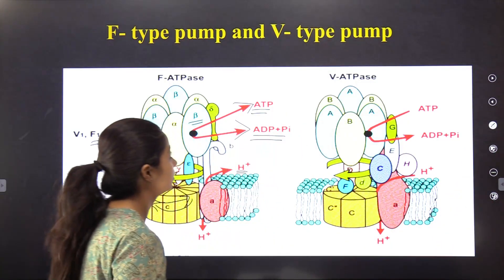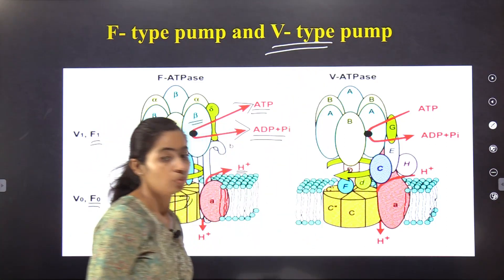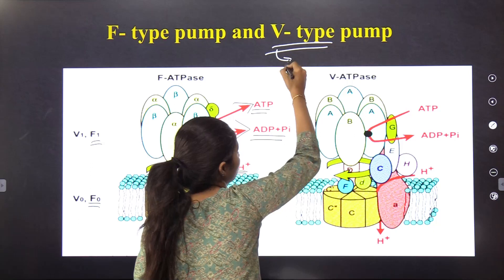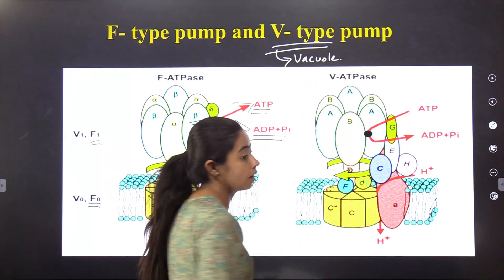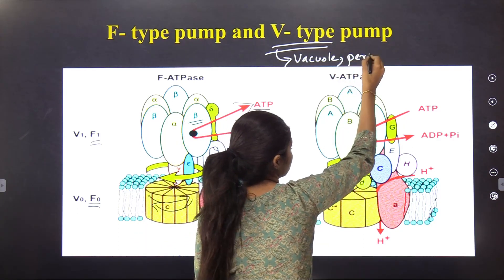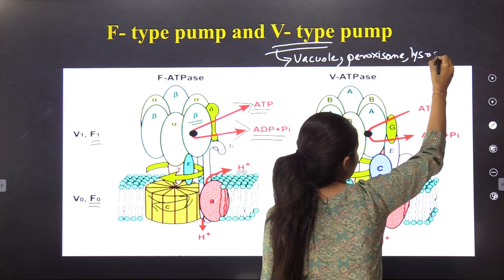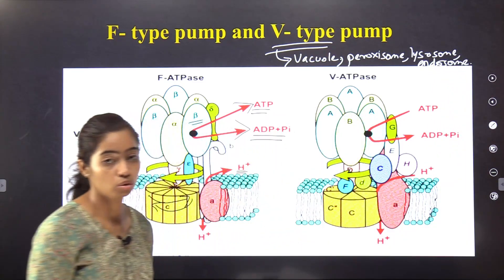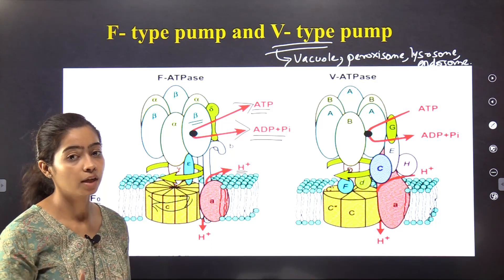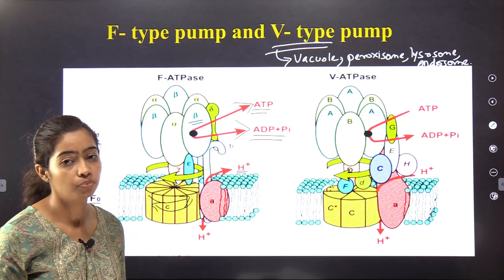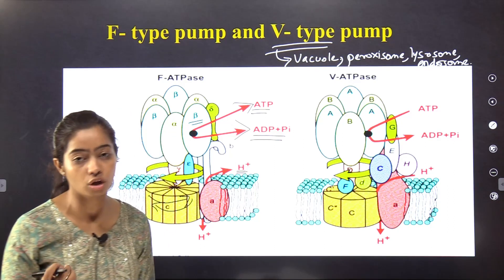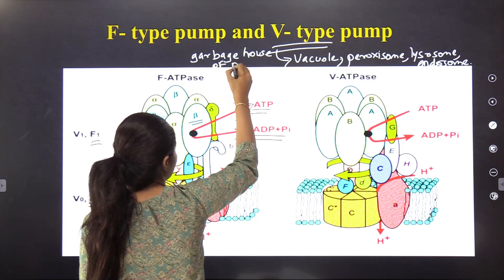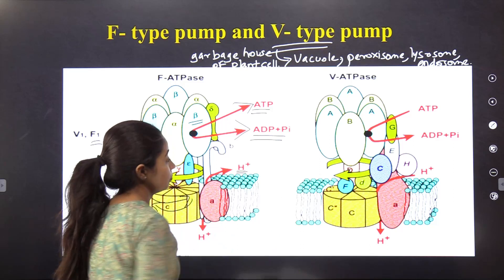The next point is the V-type ATPase. This type of pump was first discovered in the vacuole, but it can also be present in peroxisomes, lysosomes, and endosomes. The V-type pump, as the name suggests, is present in the vacuole — considered the garbage house of the plant cell. ATPase activity is present in the V-type pump.